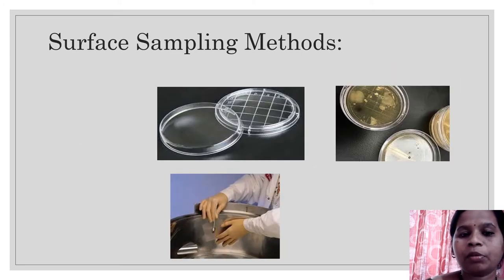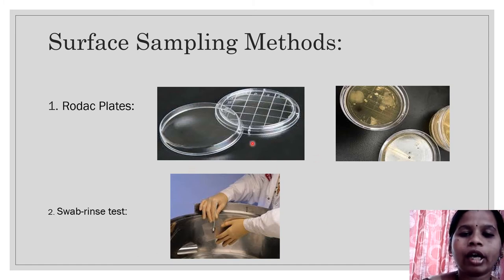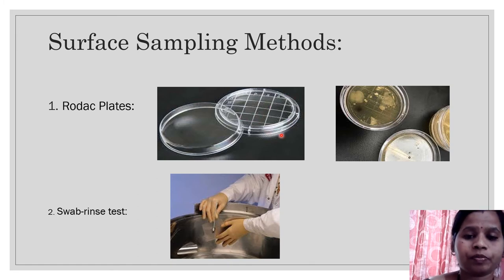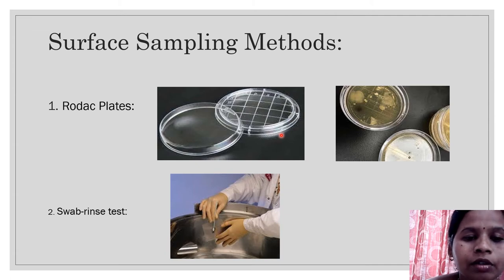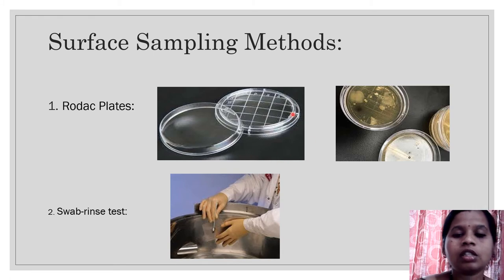Next are the surface sampling methods. For surface sampling there are two methods: Rodak plates and the swab rinse test. For the Rodak plate, there is a structure which allows counting of microorganisms in a particular area with different markings to help count colonies that grow. It uses a convex surface petri plate, and the raised agar surface can be rolled onto flat or irregular surfaces. This type of Rodak plate is used for surface contamination testing.